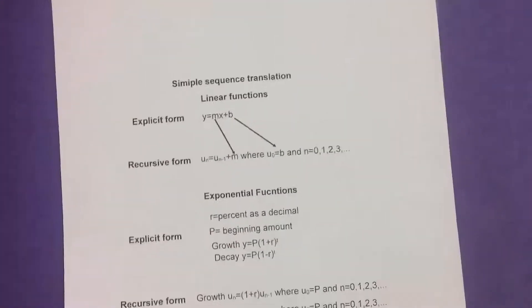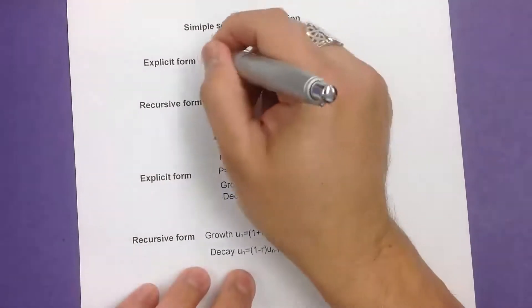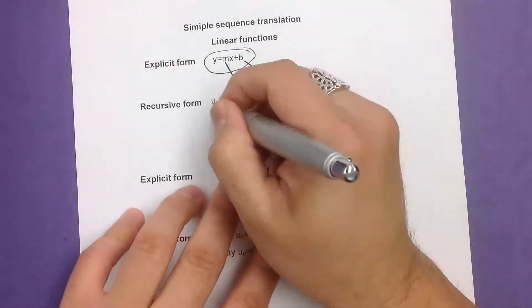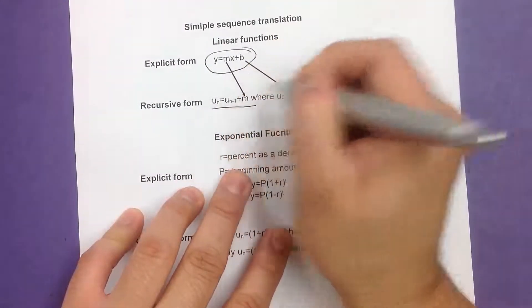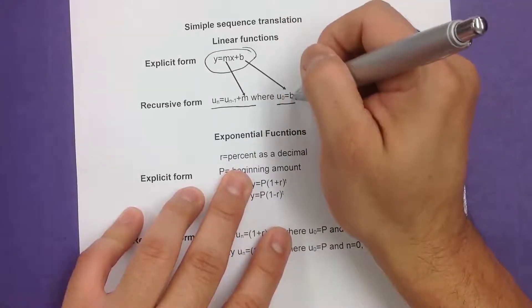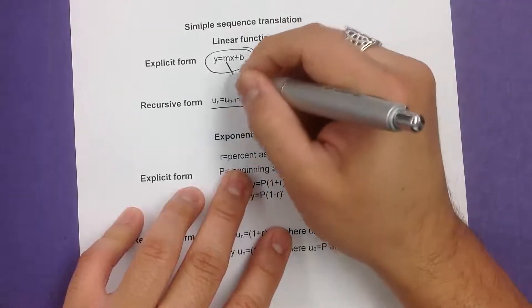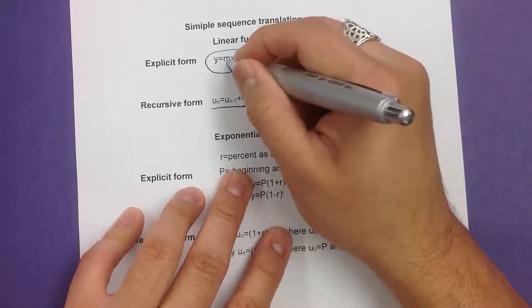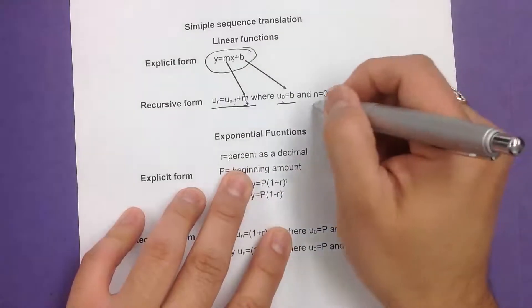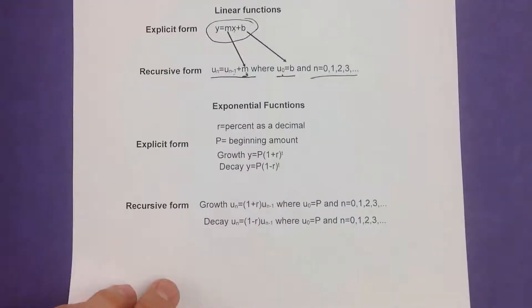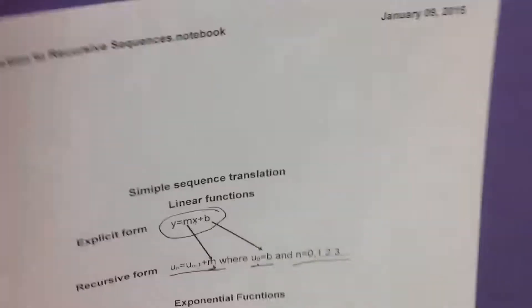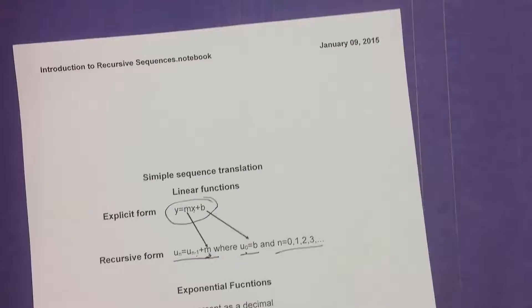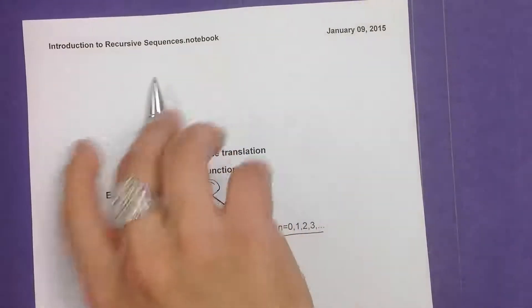And that's about it. This is what we call an explicit form. The linear formula is actually an explicit form. We always have this right here for anything linear. So b is always our starting point for u sub 0. m is whatever we're adding. Since it says multiplying, we're going to be adding. So we have u sub n. This is always the same. We'll talk about the exponentials later, but I'll save that for another day. Thank you very much, see you guys.